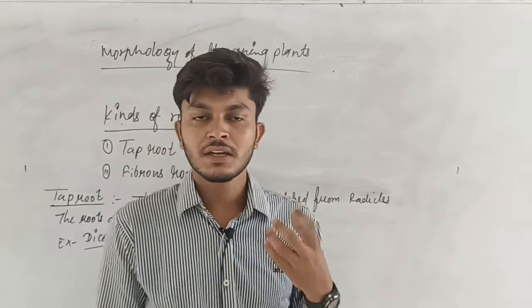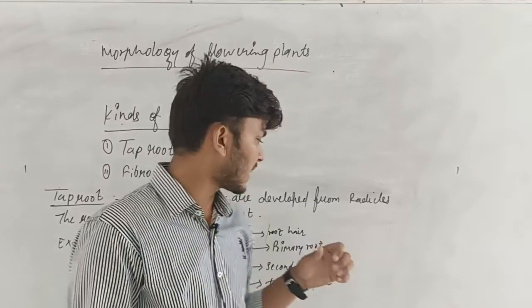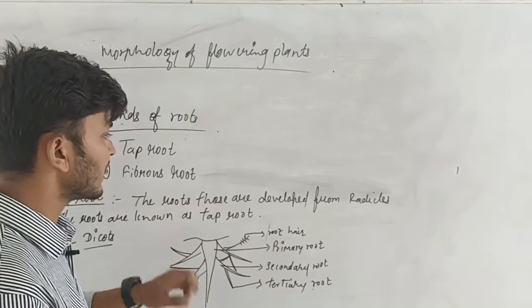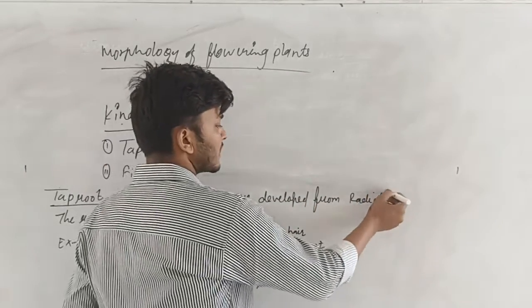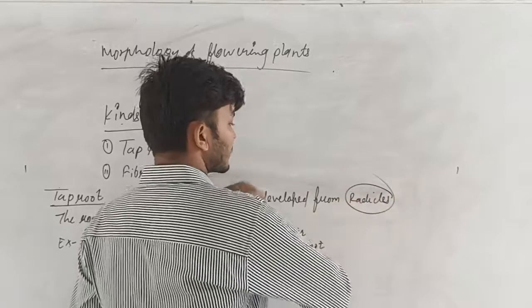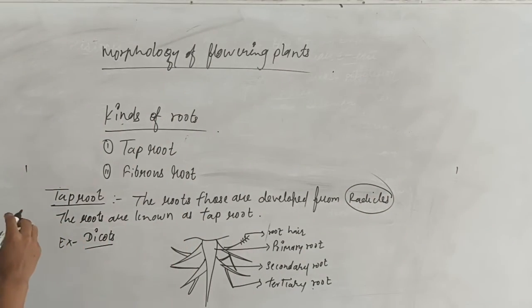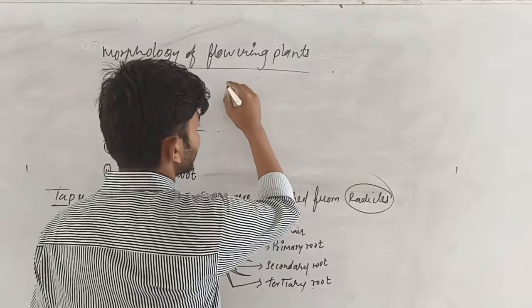Mustard, gram — in all of these, which are tap roots, tap roots are developed from radicals. Then there is a second type of root. That is fibrous root.